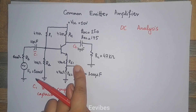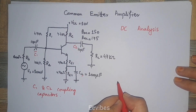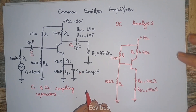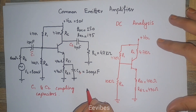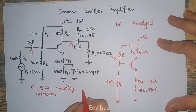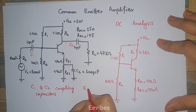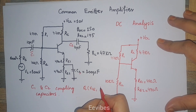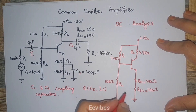When all capacitors are replaced with open circuits, the simplified DC analysis circuit is what remains. At this point, the values we need to determine are the Q-point of the circuit, which is composed of VCE and IC — the output parameters of this amplifier for the voltage divider bias configuration.